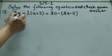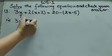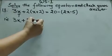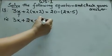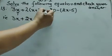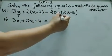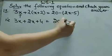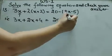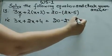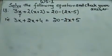So: 3x plus 2 into x gives 2x, and 2 into 2 gives 4. We have expanded the bracket. On the right side: 20 minus 2x, and minus into minus gives plus 5.